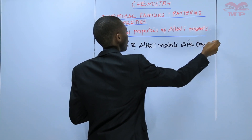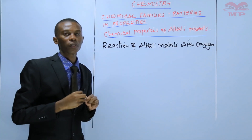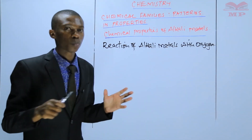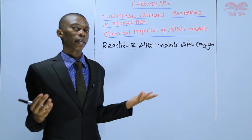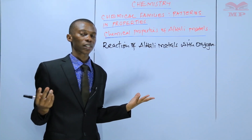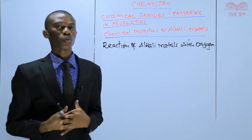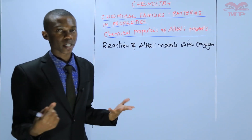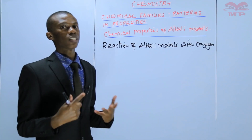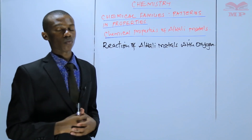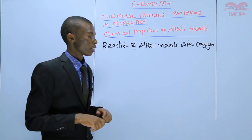So how do alkali metals react with oxygen? But just before that, when you cut a small piece of sodium metal and expose it in air, you expect that this piece of sodium is going to react with atmospheric water. When it reacts with atmospheric water, it leads to formation of sodium hydroxide and some hydrogen gas is produced.